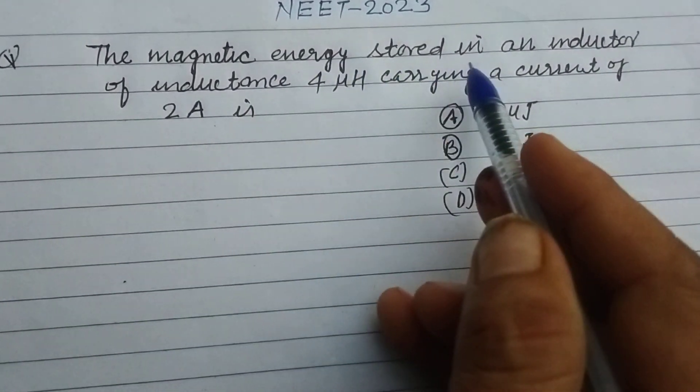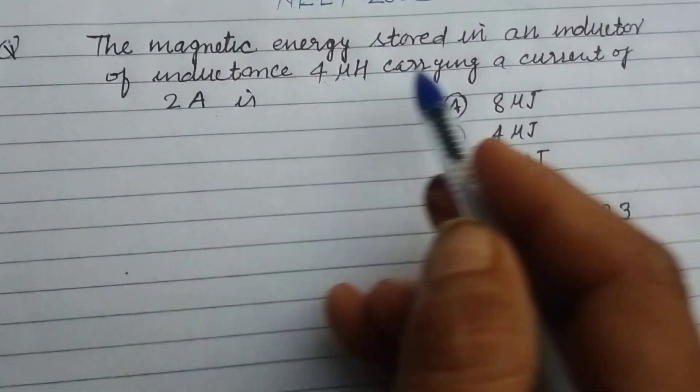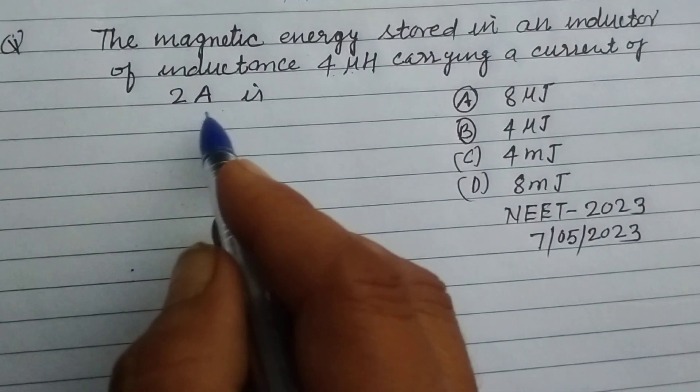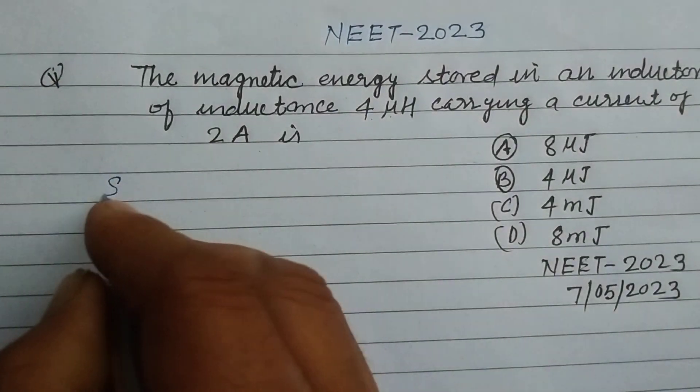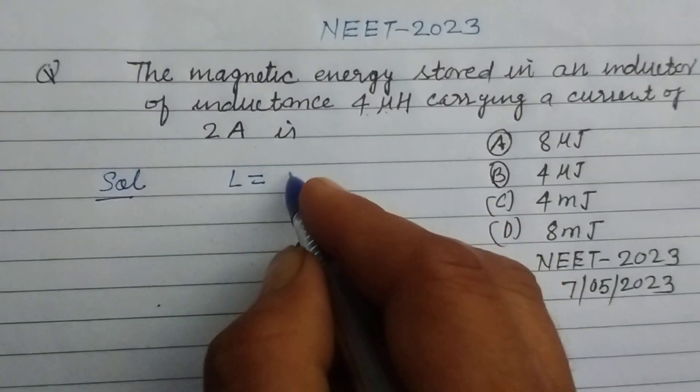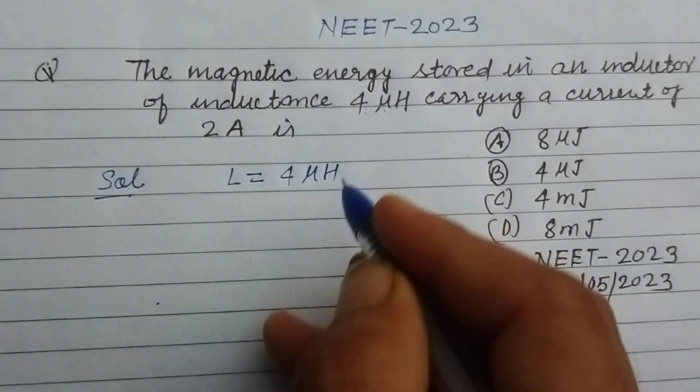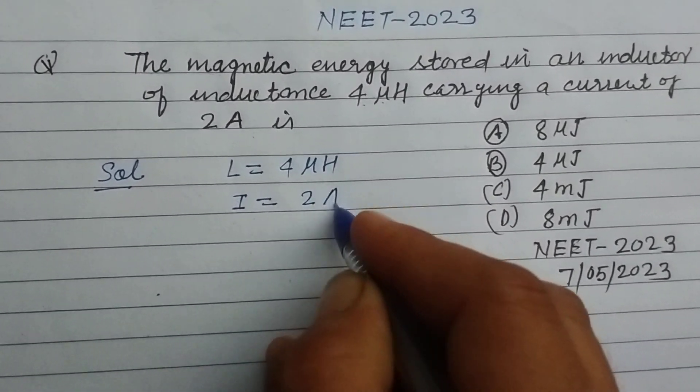The magnetic energy stored in an inductor of inductance 4 microhenry carrying a current of 2 ampere is. So here, inductance is given L equal to 4 microhenry and I is given 2 ampere.